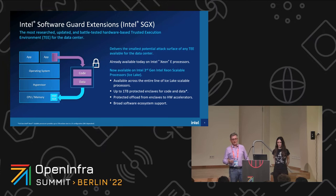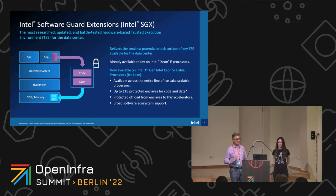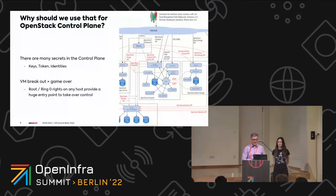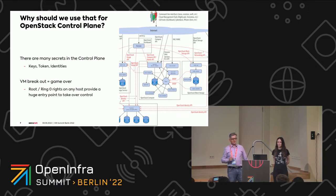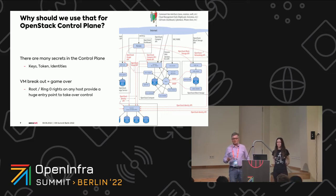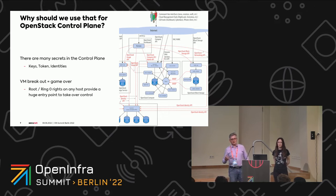Only if this code matches the hash sum will the CPU execute it — a very nice mechanism to provide code integrity. The code and data, when they go outside, are encrypted by the CPU. Other processes on the system can look into memory, can dump the memory and look for secrets or data. And most program code deals with secrets. That's where we came to the idea of using confidential computing to protect the OpenStack control plane, because there is a lot of sensitive data inside it.